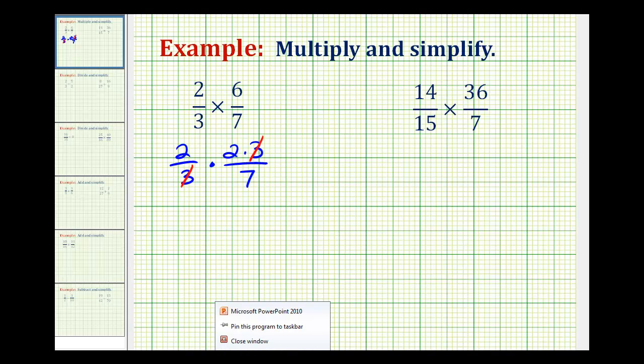Now when we multiply, our answer will already be in simplified form. So our numerator, we have 2 times 2, that's 4, and our denominator would be 7. So 2/3 times 6/7 is equal to 4/7 in simplest form.